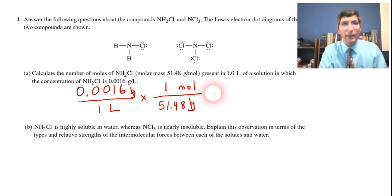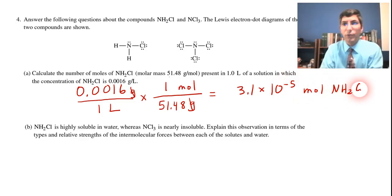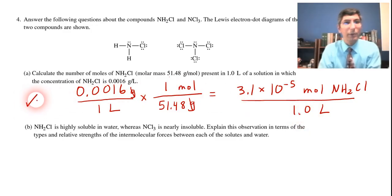We can cancel, and then when you divide this, you find the moles per liter. So that's how many moles are present in one liter of the solution. That's about 3.1 times 10 to the negative fifth moles of NH2Cl in 1.0 liter of that solution. So that's your answer, and I think that's going to be a one pointer for that one.